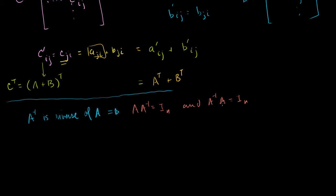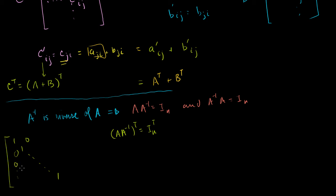Now let's take the transpose of both sides of this equation. We get that A times A inverse transpose equals the identity matrix transpose. What's the transpose of the identity matrix? It has 1's all the way down the diagonal and everything else is 0 — I11, I22, all the way down to Inn. When you take the transpose, you're just swapping the 0's; the diagonal doesn't change. So the transpose of the identity matrix is equal to the identity matrix.